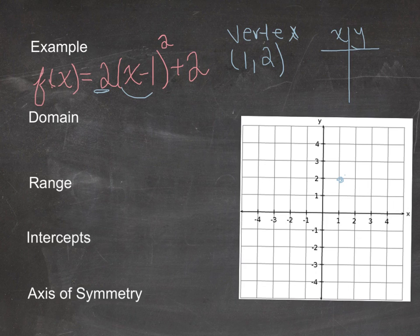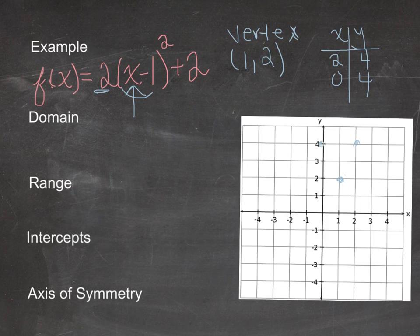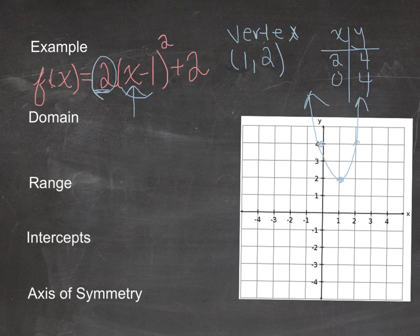To the right of the vertex, x is 2; to the left, x is 0. When x is 2: (2 − 1)² = 1, times 2 is 2, plus 2 is 4. When x is 0: (−1)² = 1, times 2 is 2, plus 2 is 4. So I plot the points (2, 4) and (0, 4). I can see that the parabola is more narrow than the parent function when the absolute value of 'a' is greater than 1.